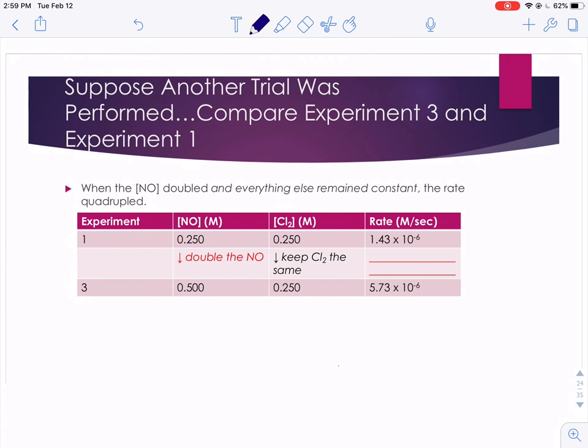Okay, so let's see if we ran another trial. This time in this trial we're going to keep the chlorine concentration the same from the original experiment, but we're going to double the concentration of our nitrogen monoxide. When you compare the rates in experiment 3 versus experiment 1, the number 5.73 is roughly 4 times the size of 1.43, so our rate is quadrupled when we go from here to here.